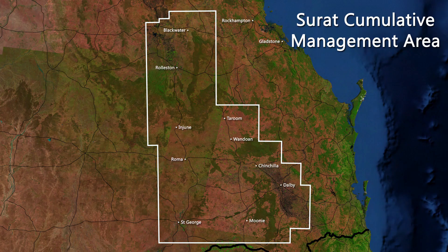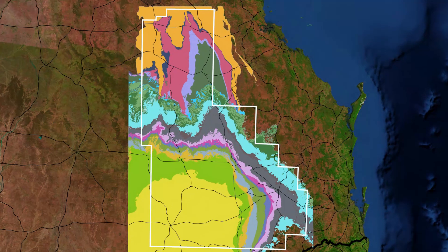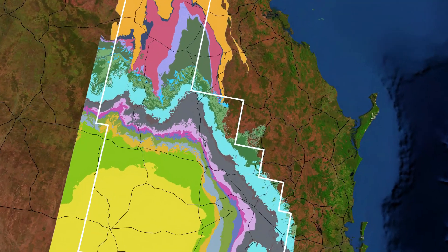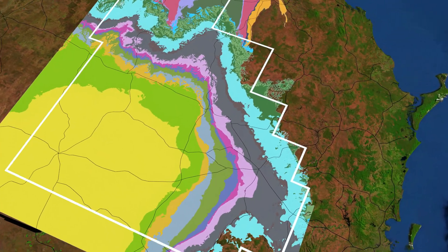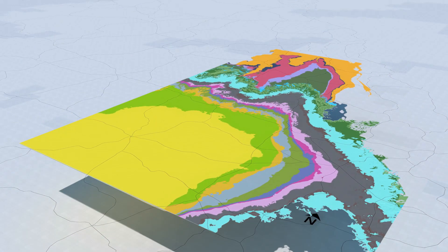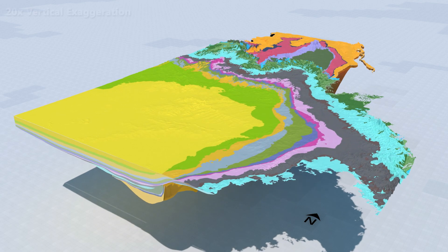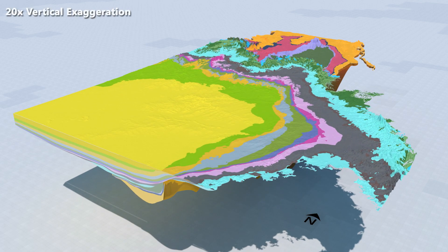This video presents the geology in the Surratt Cumulative Management Area. This 3D geological information is built by the Office of Groundwater Impact Assessment for its Groundwater Impact Assessment from Coal Seam Gas Development in the area.